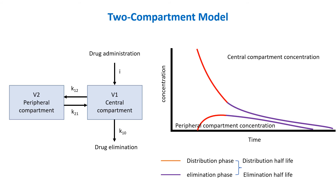These two phases have clinical implications. For example, a highly lipophilic drug is easily distributed from the bloodstream and stored in body fats. Such drugs initially exhibit a short half-life during the distribution phase but a much longer half-life during the elimination phase, due to the slow release from fat stores in the peripheral compartment.